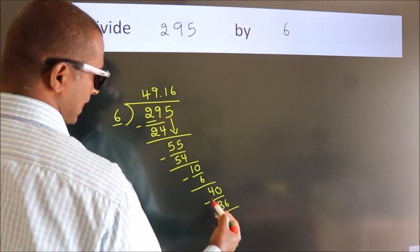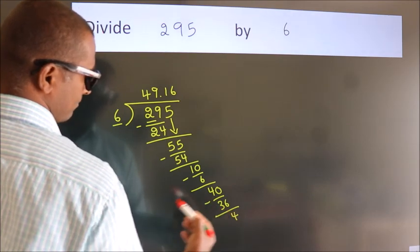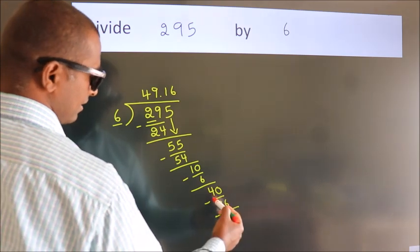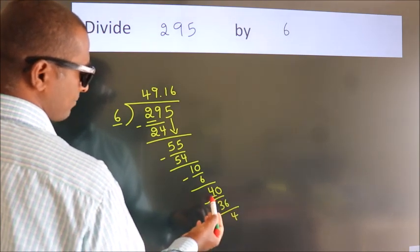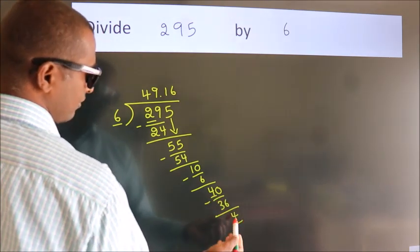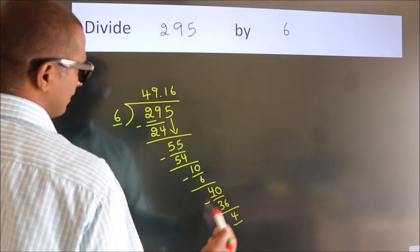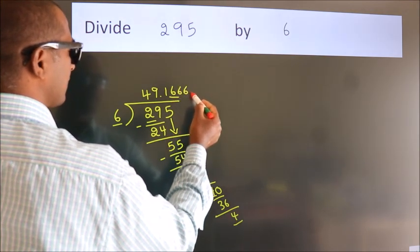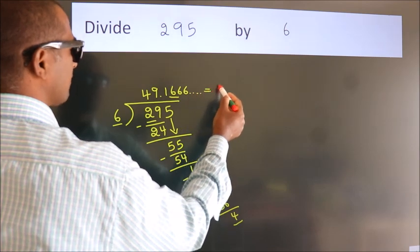Now we subtract. We get 4. Now you observe: we had 4 here and we got 4 again. That means this number keeps on repeating. So this is our quotient.